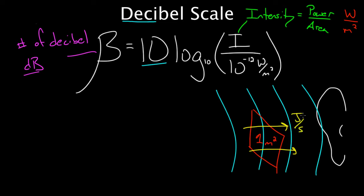how many joules of sound energy per second pass through the one square meter. That would be the number of watts per meter squared, which would be the intensity. So watts is joules per second. And so this gives you an idea of how much energy per second passes through a certain amount of area.